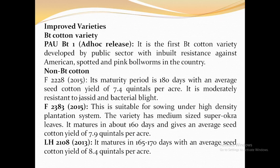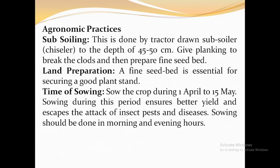The next variety is LH 2108, also known as Ludhiana High Yield. It was released in 2013 and matures in 160 to 170 days with an average seed cotton yield of 8.4 quintals per acre.